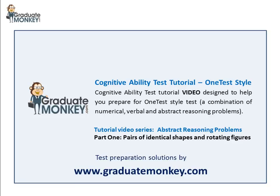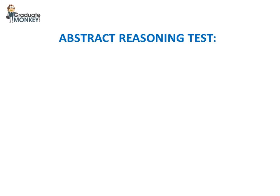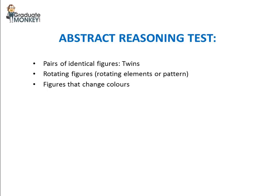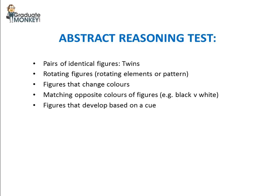Throughout the entire video series, we're going to review the following types of questions or problems, and there are nine of them. The first one is called twins or pairs of identical figures. The second most common type is called rotating figures. Then you have figures that change colors or figures that have matching opposite colors, and figures that develop based on a cue or set of cues.